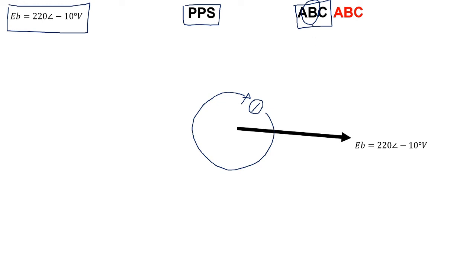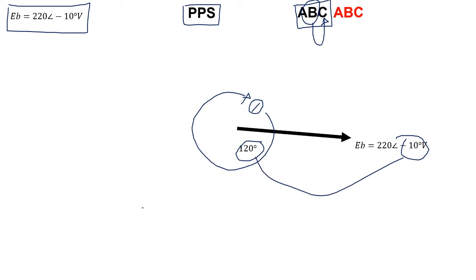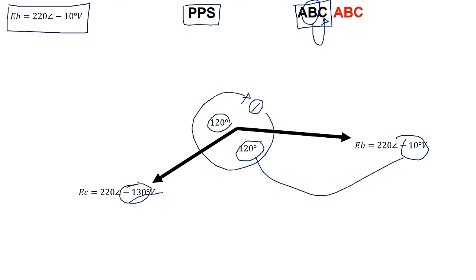So if B is the reference, knowing that we need a spacing of 120 degrees between each vector, the next one will be C. If you take minus 10 minus 120, then we're going to have an angle of minus 130 degrees.